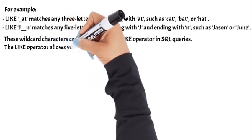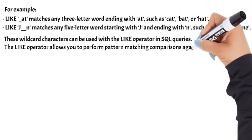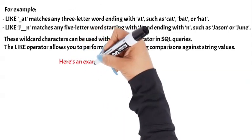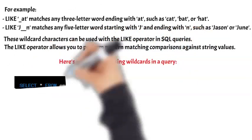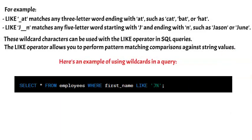The LIKE operator allows you to perform pattern matching comparisons against string values. Here's an example of using wildcards in a query. This query selects all records from the employees table where the first_name column starts with the letter 'j'. The % acts as a wildcard to match any characters following the 'j'.